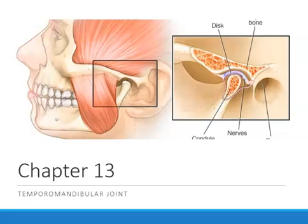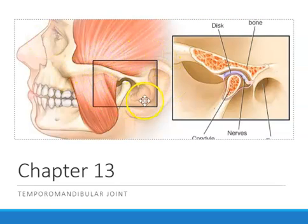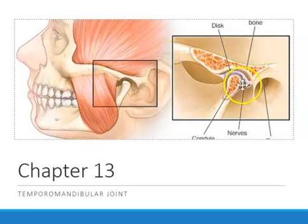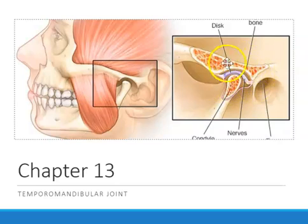Chapter 13 is on the temporomandibular joint. This is a joint that is used very heavily — it's used when we speak, when we chew, when we swallow. If you were to take away the muscles, this is what it looks like — it's called the TMJ.